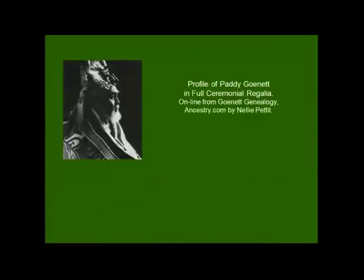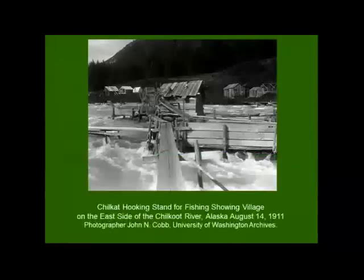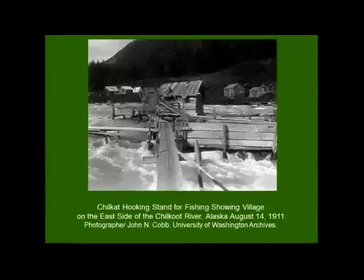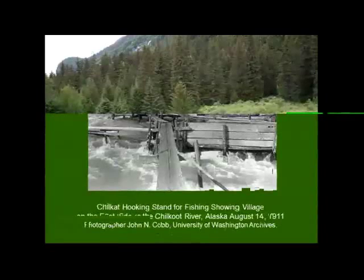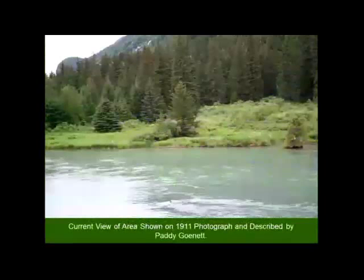The last living resident out there was Patti Gunnett, shown here in full ceremonial regalia — found in his genealogy at Ancestry.com by Nellie Pettit. He said that on the other side of the river — the east side where the mountain fell in — there was a village over there. We have his testimony to that effect, and now we have a photograph that actually shows us. This photograph shows houses over on the other side of the river, and this is what it looks like today in that same area. You can see up in the left-hand corner Little Red Snapper, or the mountain that broke it, which helps you identify where we are. Archaeology can be used to date that exactly and complement his testimony.